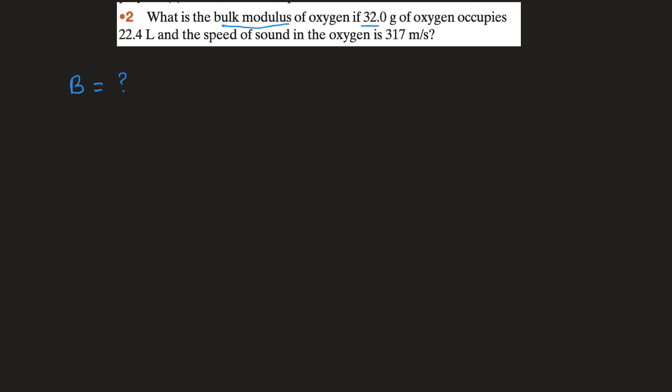Problem number two: what is the bulk modulus of oxygen if 32.0 grams of oxygen occupies 22.4 liters and the speed of sound in oxygen is 317 meters per second? First, we write the data. We need to find bulk modulus B. The mass of oxygen is 32 grams, which we convert to 32 × 10⁻³ kilograms.